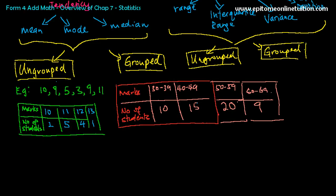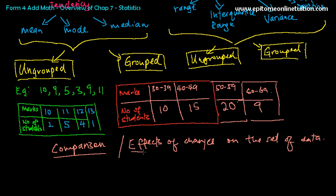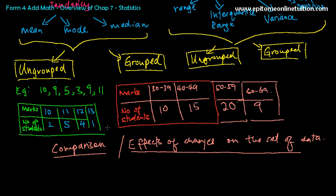And the last part of statistics, after you have learned all these things, how to find these seven things, the last part of statistics is this. You will be asked to do comparison and you will be asked to do effects of changes on the set of data. Comparison would mean this: You're given two sets of data, and then they will ask you, which one is more consistent? Which one is more suitable? Or they will give you a set of data, and they will ask you, what if I change some of the data? What if I add 9 to this set of data? What if I take out 11? What if I add one more student inside? What will happen to the mean, mode, median, range, interquartile range, variance, or standard deviation? That is called effects of changes.